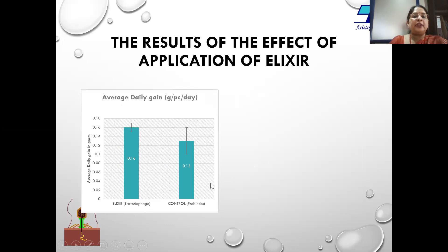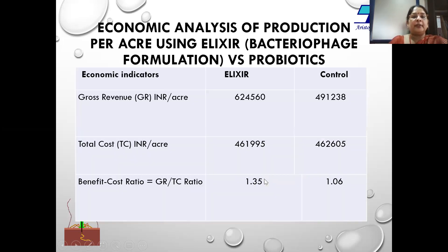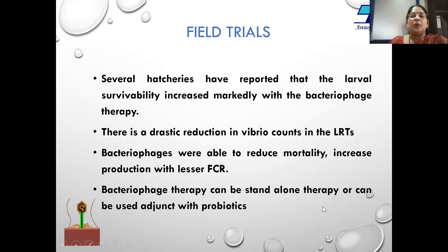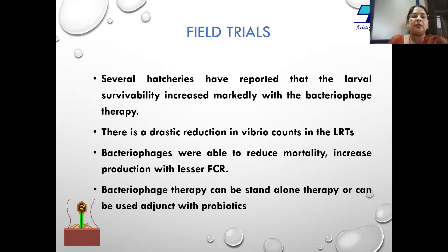The average daily gain of shrimp was higher using Elixir compared to probiotics. Economic analysis of production per acre shows that the benefit-to-cost ratio using Elixir is 1.35 compared to 1.06 using probiotics. All these studies prove that larval survival increased markedly with bacteriophage therapy, there is a drastic reduction in vibrio counts in larval rearing ponds, and bacteriophages are able to reduce mortality and increase production with lower FCR in grow-out ponds — either as a standalone therapy or as a valuable adjunct to probiotics.